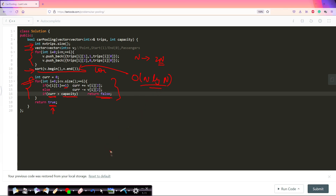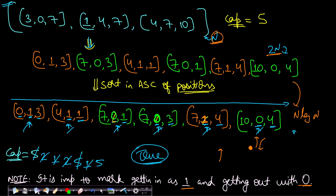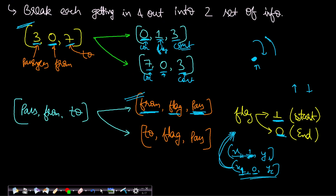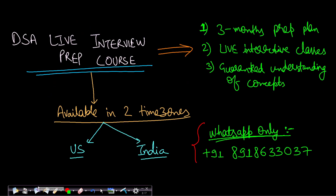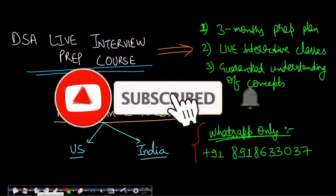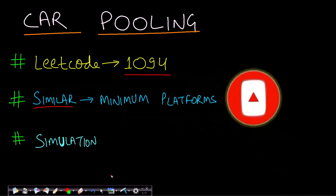If at any point the current number of people in the bus exceeds the capacity, return false — we've run out of bus capacity. Otherwise, after completing the simulation, return true. The sorting step is the most time-consuming at O(n log n), which is the overall time complexity. I hope you understood it — if you have any doubt, ask in the comments. Please like the video, subscribe to the channel, and see you in the next video. Thank you!